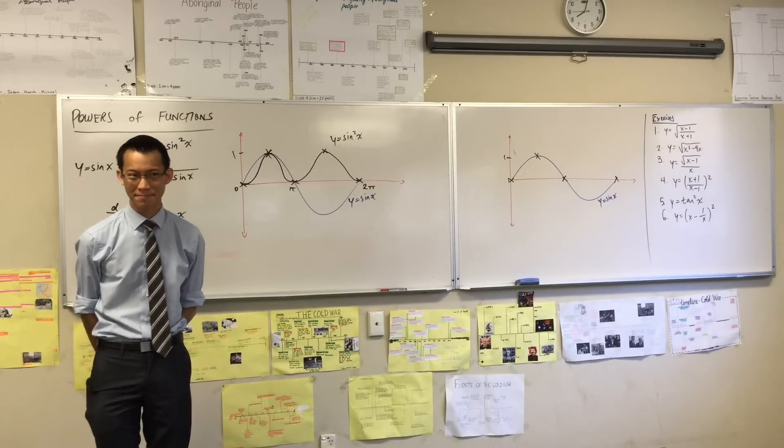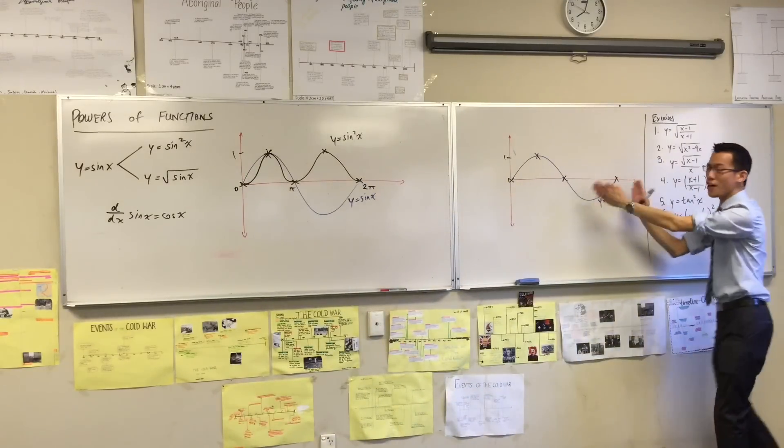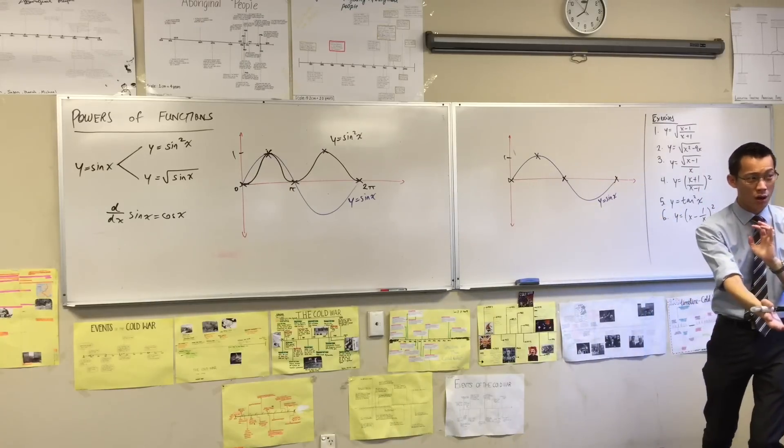Now, what can you tell me? Between π and 2π doesn't exist. So I've got a domain restriction here, right? And the reason for that was because...